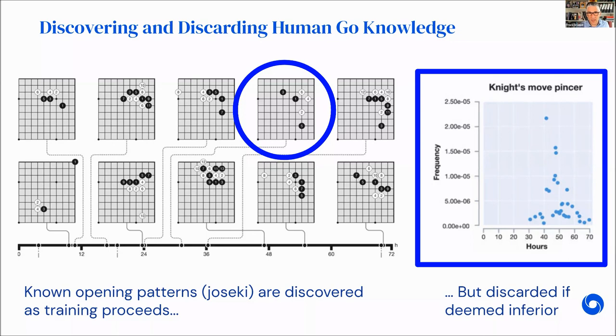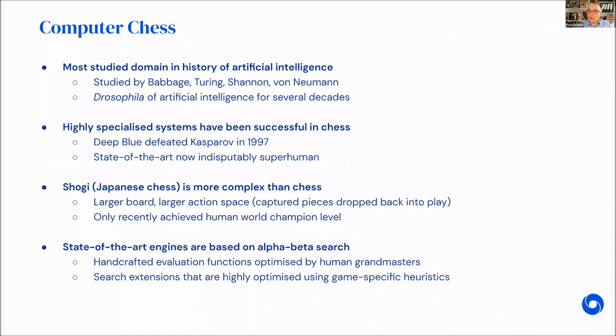This has served as inspiration for the professional Go community who have adapted their own style of play in light of what AlphaZero and other systems discovered. We can really say that the system discovered new knowledge here that is now being used by human professional players.